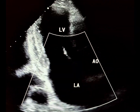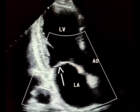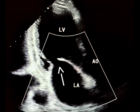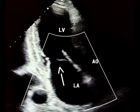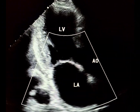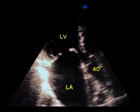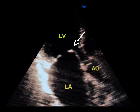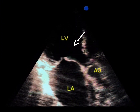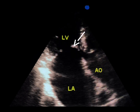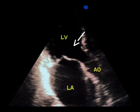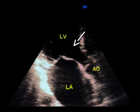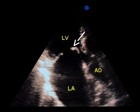In conclusion, tenting of the mitral valve leaflets during systole suggests functional MR, and management should target the left ventricle. However, if you observe doming of the mitral valve leaflets during diastole, this indicates that the mitral valve is the culprit lesion and is affected by a rheumatic process, leading to rheumatic mitral valve disease.